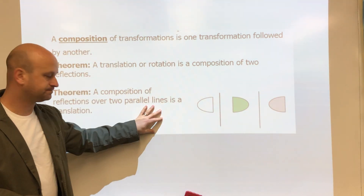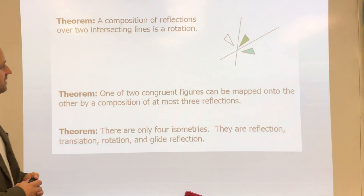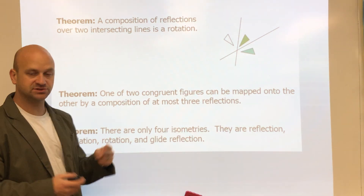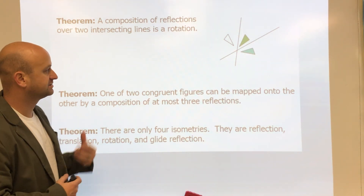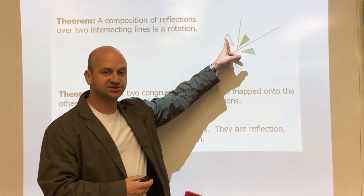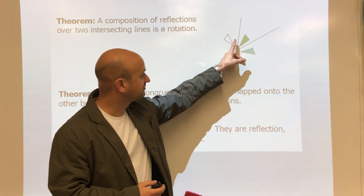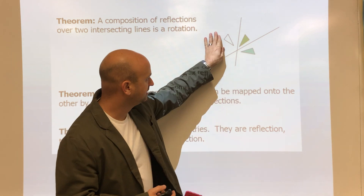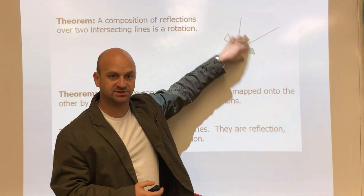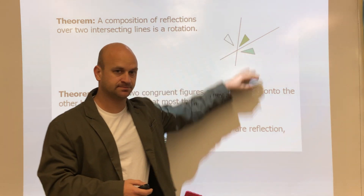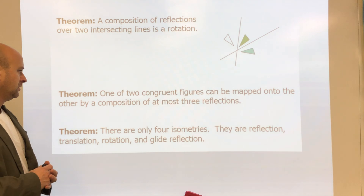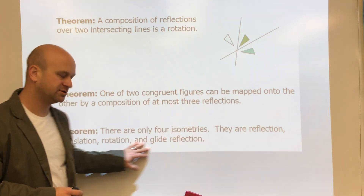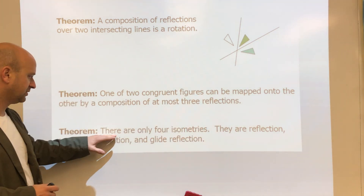A composition of reflections over two intersecting lines is a rotation. So if we start at this shape, reflect it over this line, and reflect it again, this would be the same as a rotation.